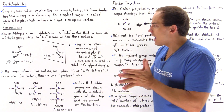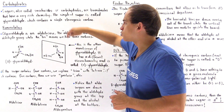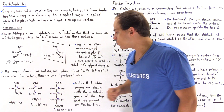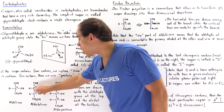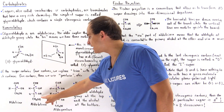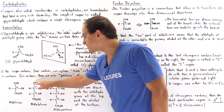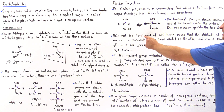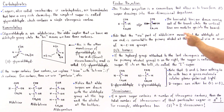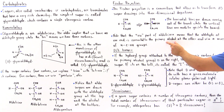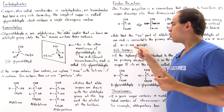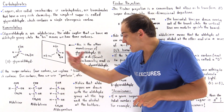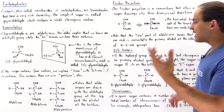Now let's define what the ending 'ose' means. In any of our aldose molecules — aldotriose, aldotetrose, aldopentose — we have CHOH groups separating the aldehyde and the primary alcohol. The 'ose' part means that the aldehyde at one end is connected to the primary alcohol at the other end via a series of CHOH groups. In the aldotriose we have one such group; in the aldotetrose, two; in the aldopentose, three; and in the aldohexose, four, and so forth.